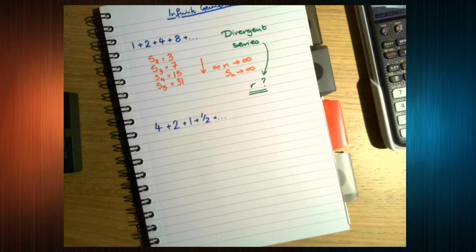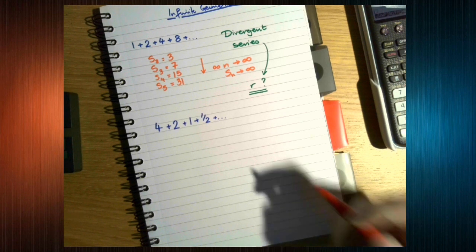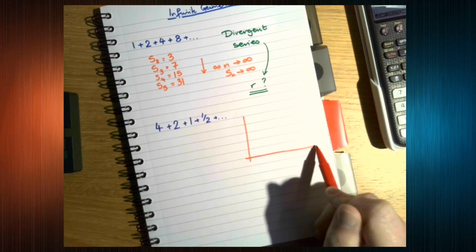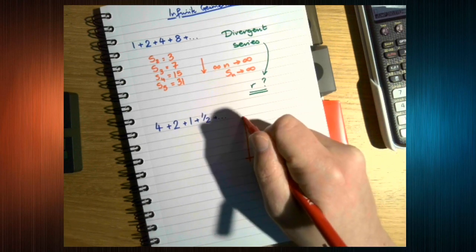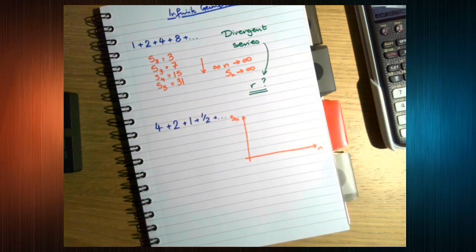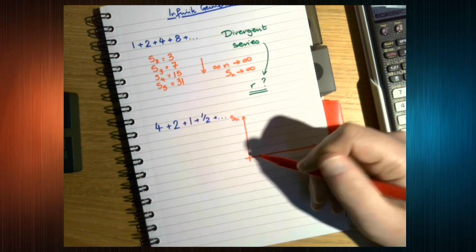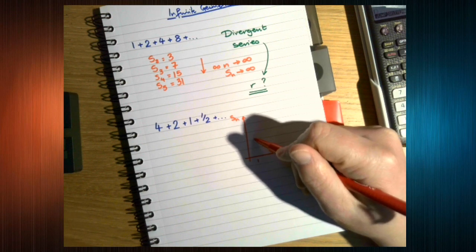You've got to think, okay, if we were to plot N and the sum, so when N is 1, the sum is 4.